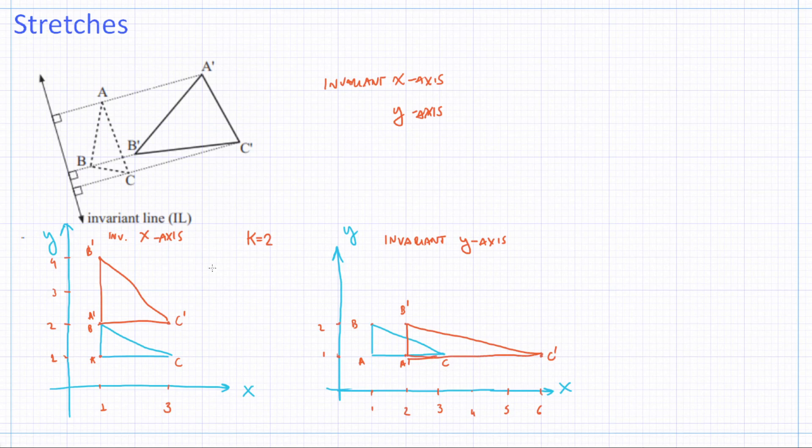Mathematically, the transformations that we're doing here are, we have x and y being transformed. Since this is invariant x, x is going to be the same, and y is going to be stretched. Here, with invariant y-axis, it's the opposite. Y is going to be the same, so this is kx, y.